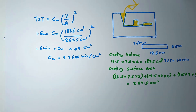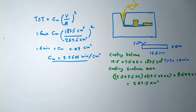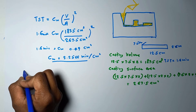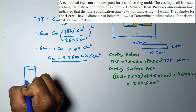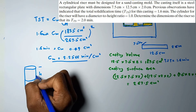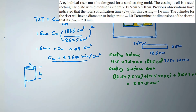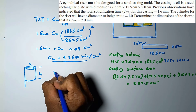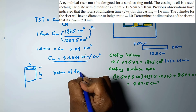This mold constant is also valid for the riser design, so we will use Cm to calculate the riser dimensions. We need to design a cylindrical riser. Let's take its height as h. The problem states the cylindrical riser must have a height-to-diameter ratio of 1, so the diameter is also equal to h.